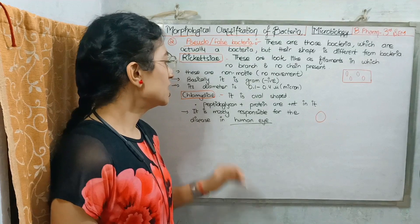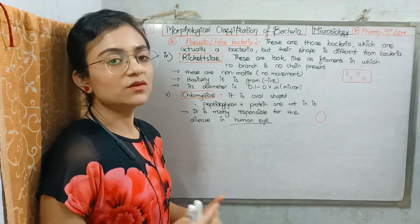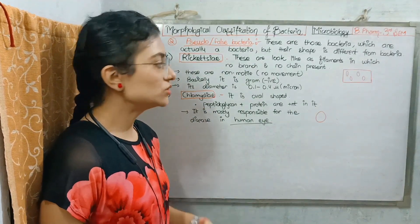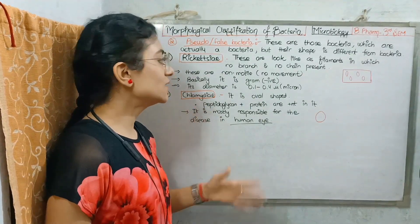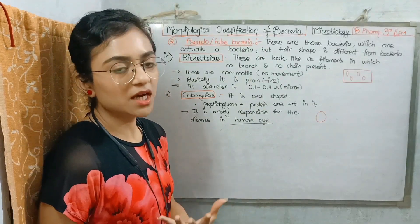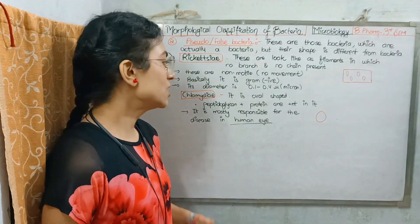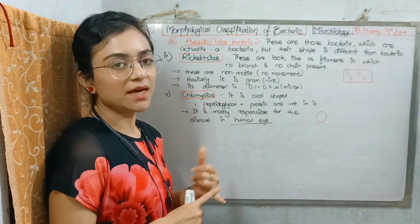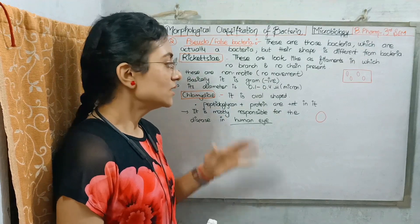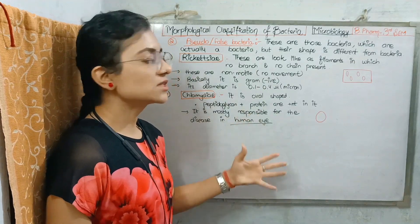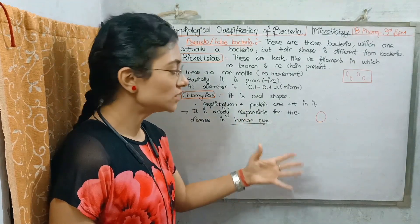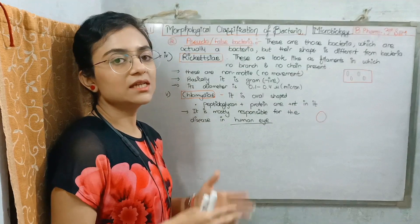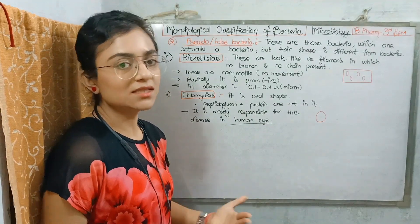The last type of pseudobacteria is Chlamydia. Chlamydia is oval-shaped. Peptidoglycan and protein are present in it, and it is generally responsible for causing disease.